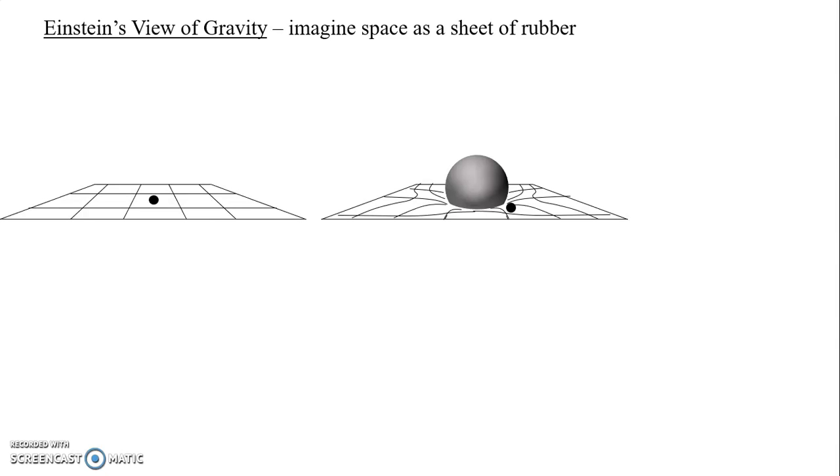When scientists and mathematicians analyzed how space would be curved based on Einstein's view, they found they got results that were exactly the same as Newton's law of gravity. So here we have two completely different ways of visualizing how gravity works, and they agree with each other, even though they almost have nothing to do with each other.